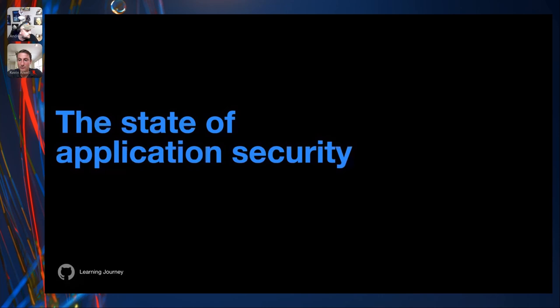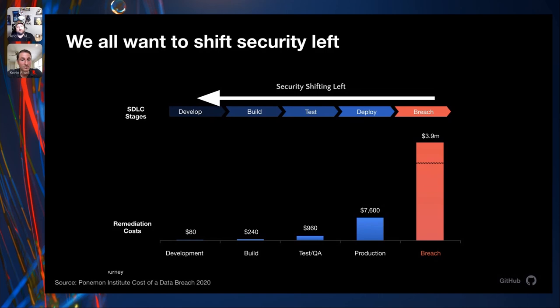Given the enormous cost of a breach and the scarcity of security researchers who can harden applications against breaches, the obvious solution — as we all know — is to shift security left: addressing security concerns early and relatively easily in the development process. But as we've seen, even if developers act to fix vulnerabilities when found, they continue to introduce vulnerabilities into their code base. So what's the truth? Let's talk about how we can actually truly shift this left.